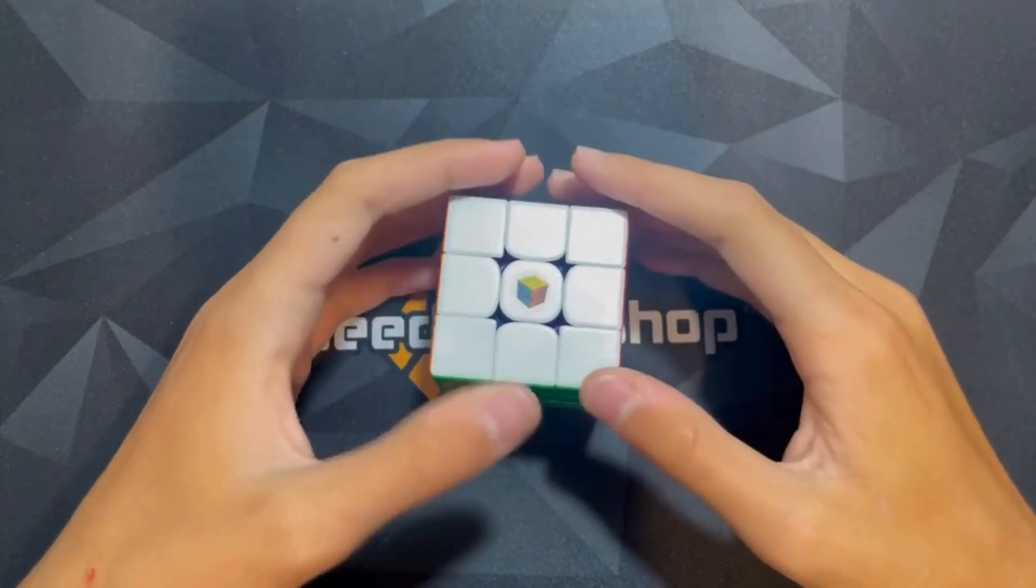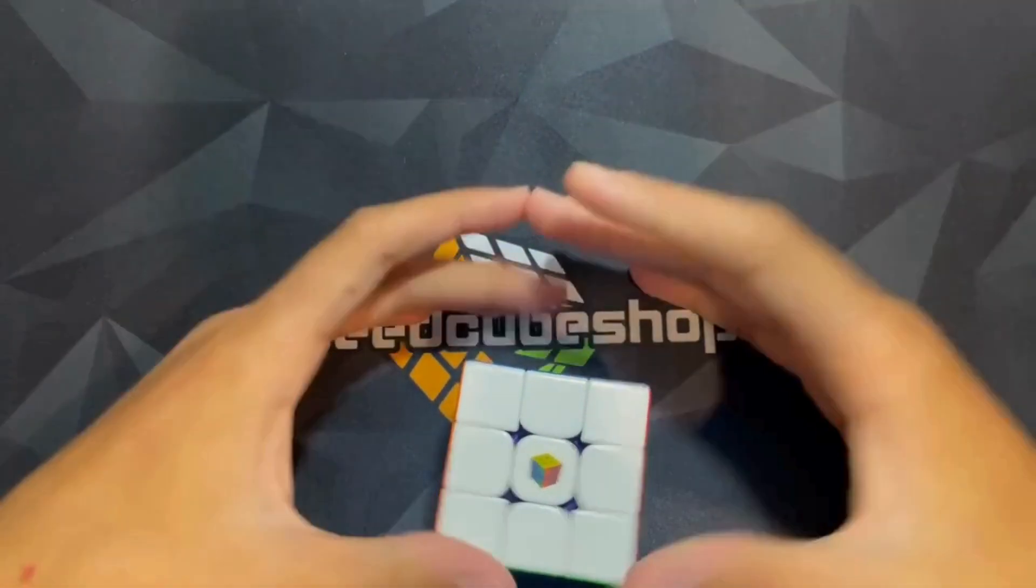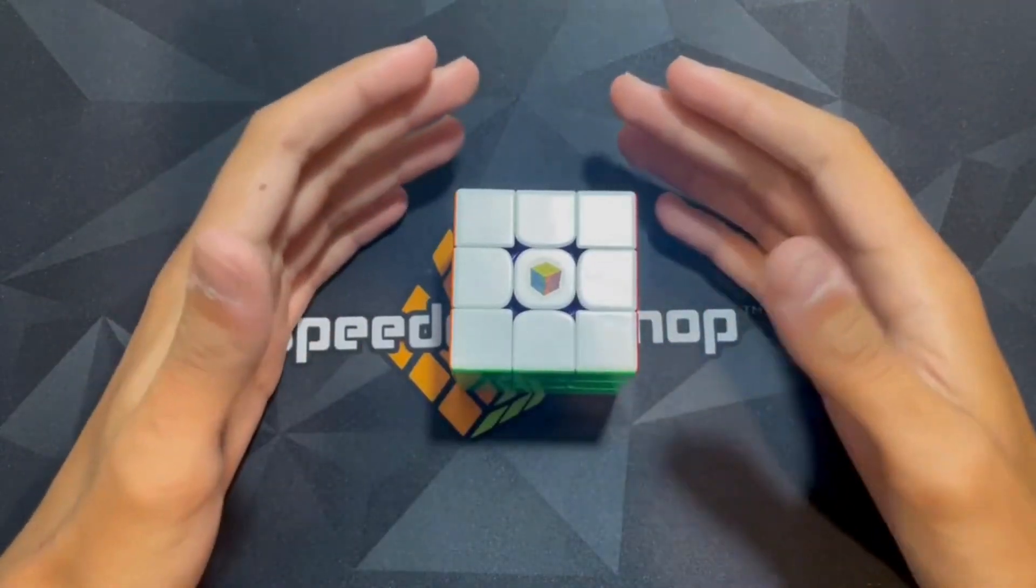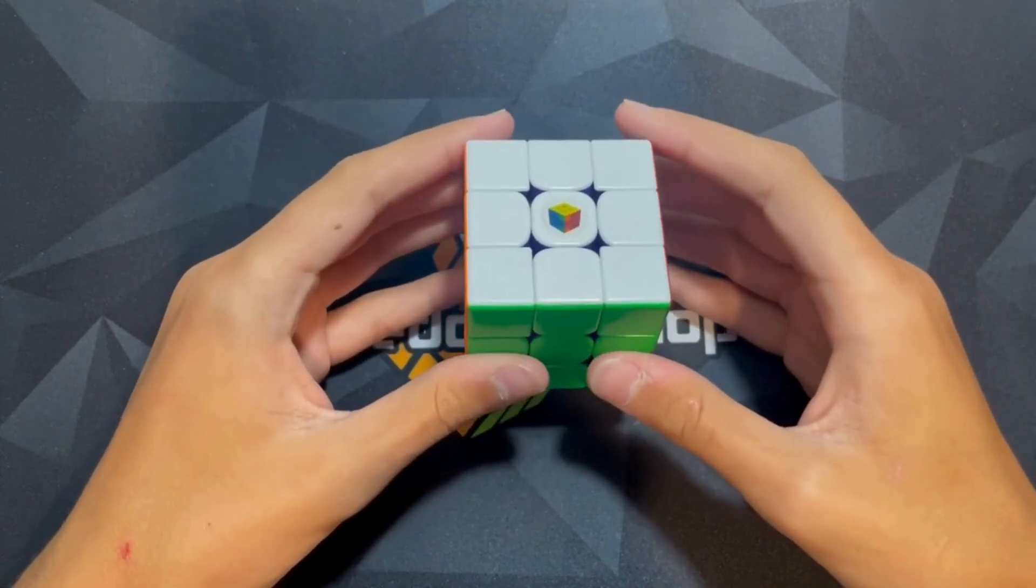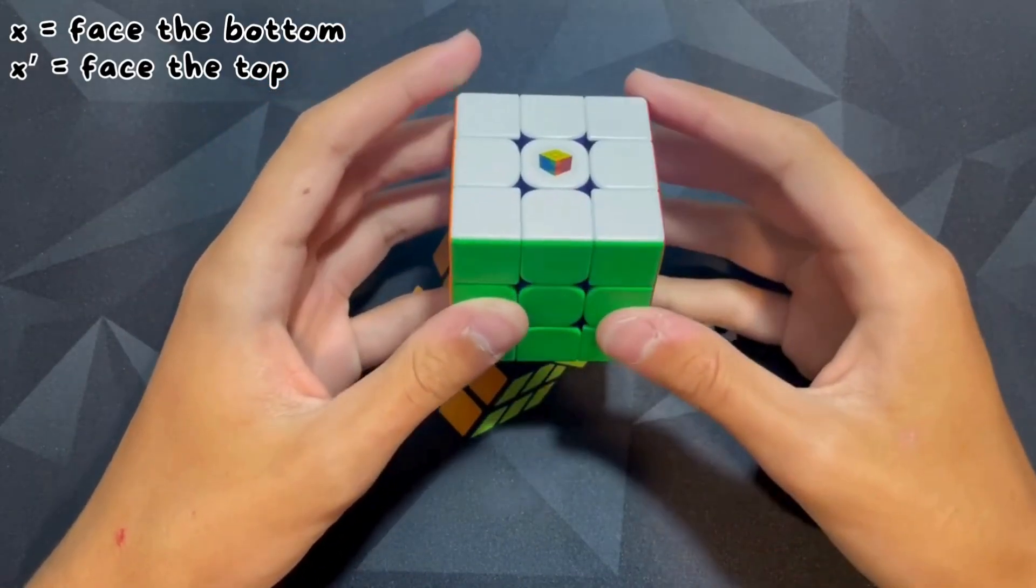We're going to be going over three rotations and three moves, so let's start it off with the rotations. First is the X rotation. If you see a lowercase X in an algorithm, that just means you face the bottom.